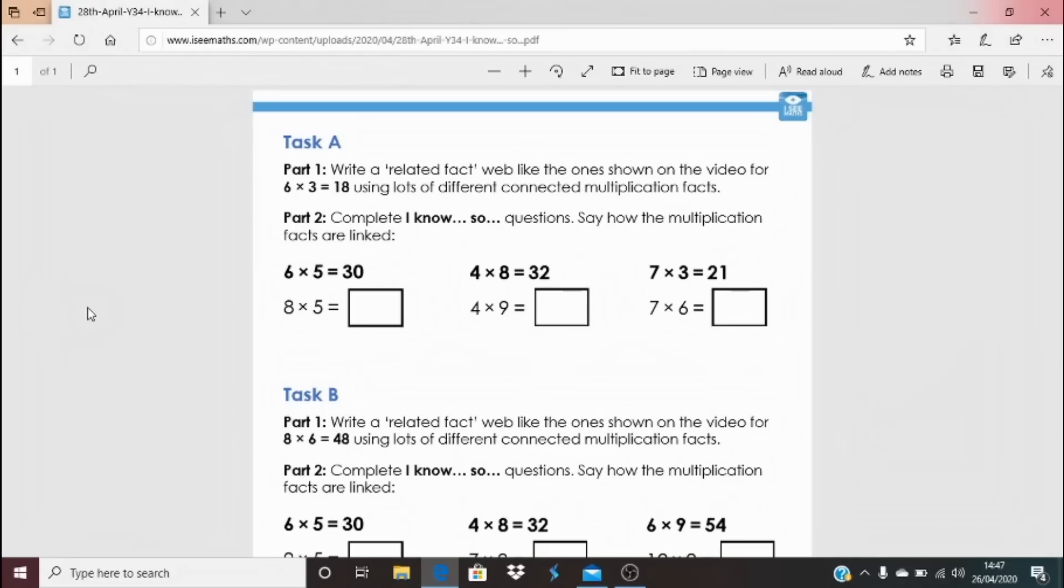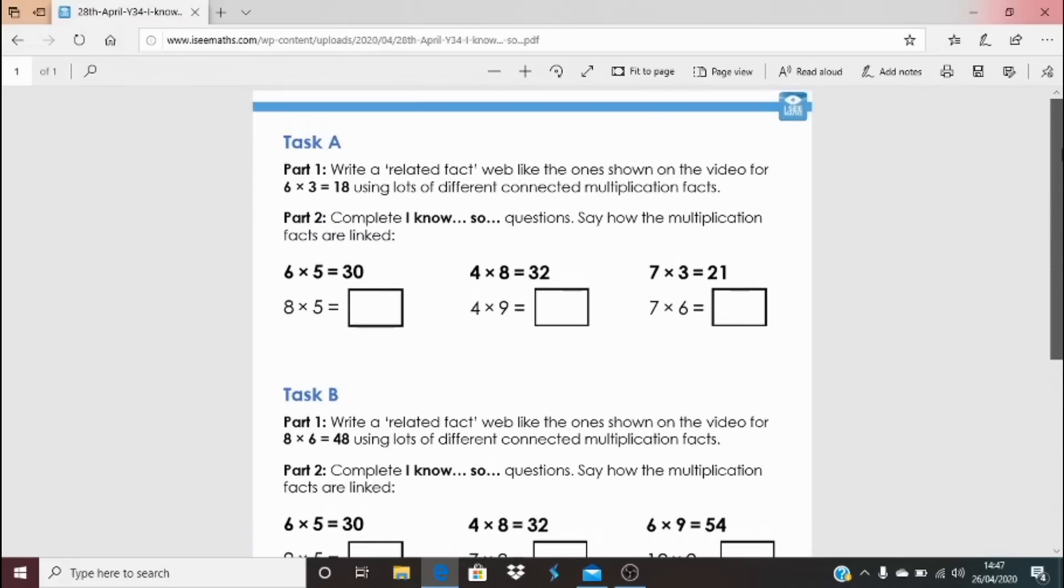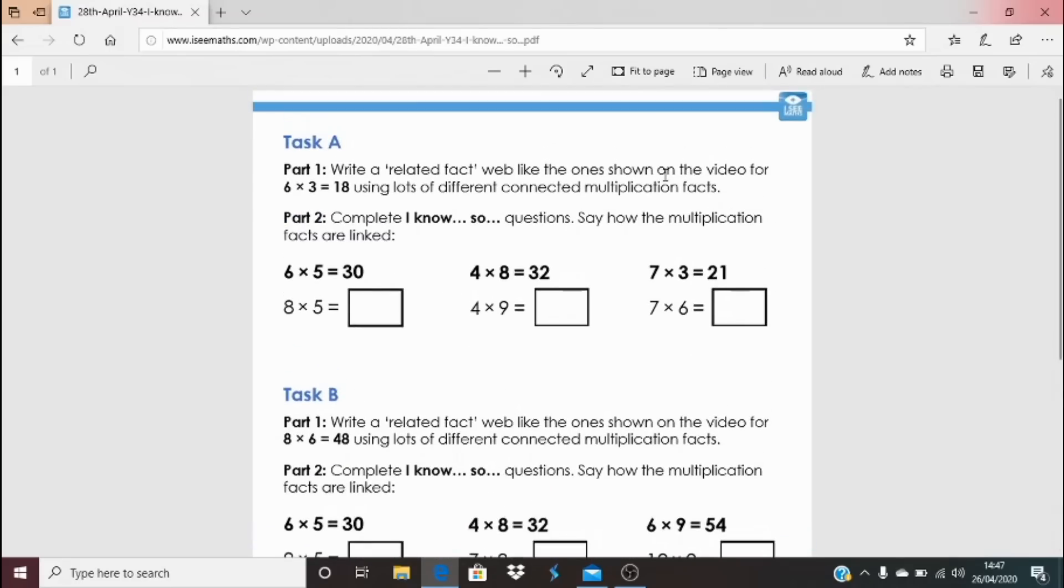So, for today's task, just click on the link underneath the video from wherever you're watching the video from, and it will bring open these tasks, task A, task B, and task C. Now, your job is to create your own related fact web, like the ones we've had a look on the video. So, for task A, it would be 6 times 3 equals 18. That's the number fact to go in the middle of your grid, and then think of as many different number sentences, multiplication ones, that you can think of, that link to 6 multiplied by 3 equals 18. Now, for this activity, I want you to choose the challenge that's just right for you. You might decide that, actually, oh, I don't want to use that number fact. I'm going to use a different one. But just make sure it works for you, whatever you choose to do.